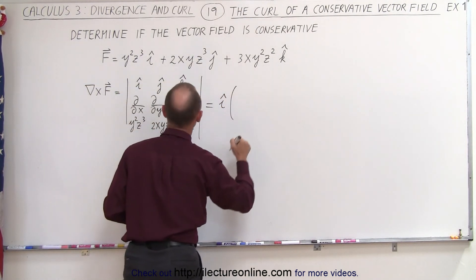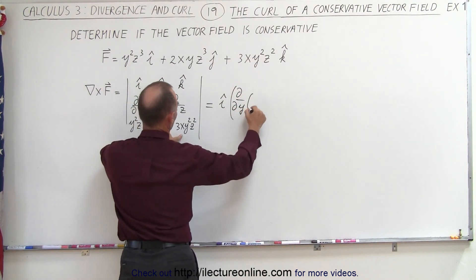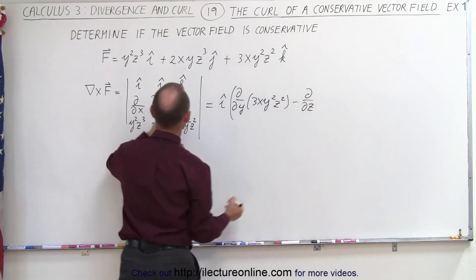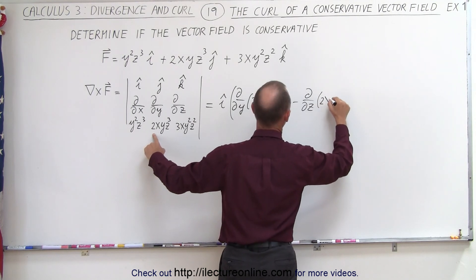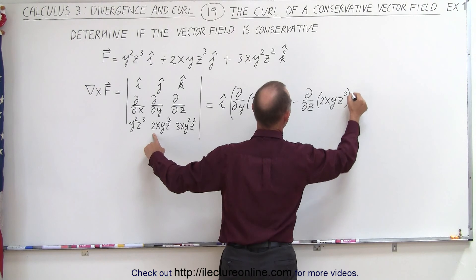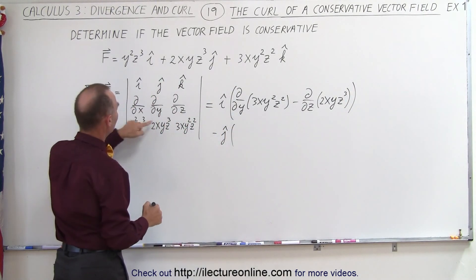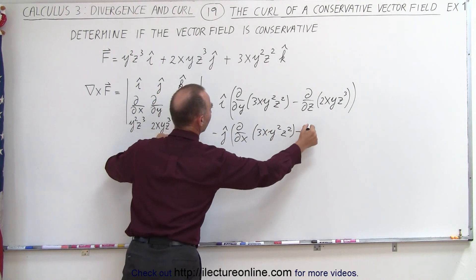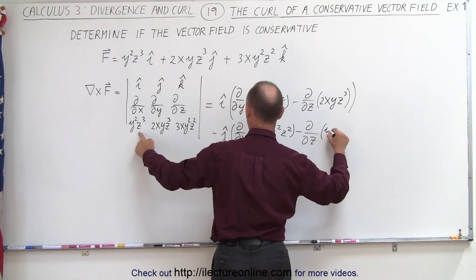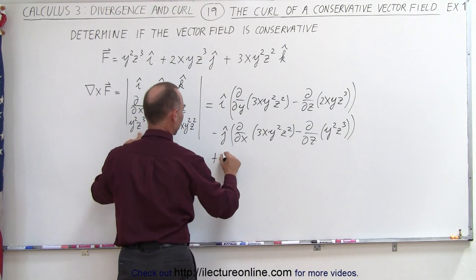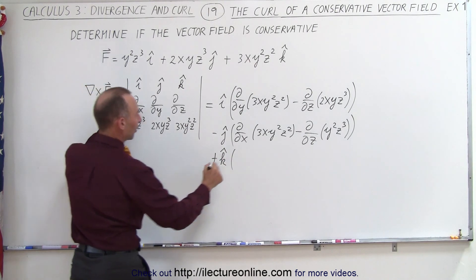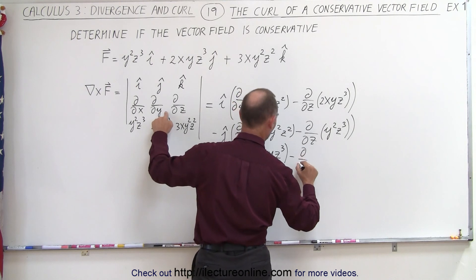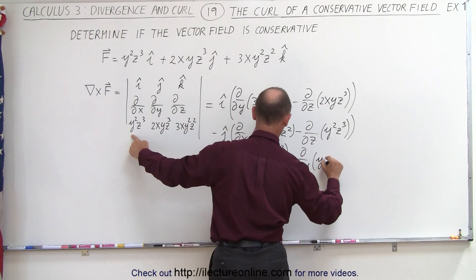The curl is equal to i times the partial with respect to y of 3xy²z², minus the partial with respect to z of 2xyz³. Then we subtract the j direction times the partial with respect to x of 3xy²z² minus the partial with respect to z of y²z³. Finally, plus the k direction times the partial with respect to x of 2xyz³ minus the partial with respect to y of y²z³.